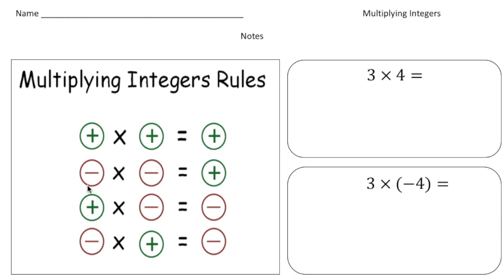Also, when both signs are negative — like a negative times a negative — because they are the same, it results in another positive. Now, when the signs are different, that's when you get a negative. So a positive times a negative is a negative, and a negative times a positive is a negative. The key thing is: same signs give a positive product; different signs give a negative product.